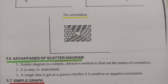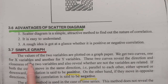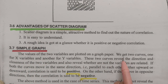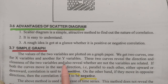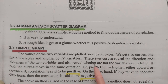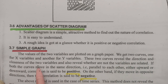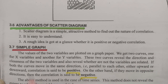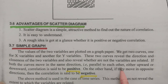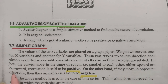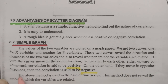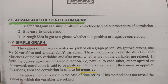The second graphical method is the simple graph. The values of the two variables are plotted on graph paper, giving two curves — one for the X variable and the other for the Y variable. These two curves reveal the direction and closeness of the two variables. If both curves move in the same direction, parallel to each other either upwards or downwards, the correlation is positive. If they move in opposite directions, the correlation is negative. This method is used in the case of time series.